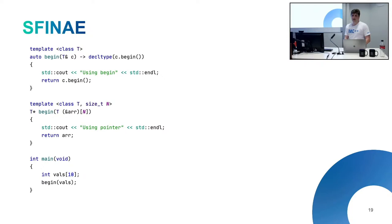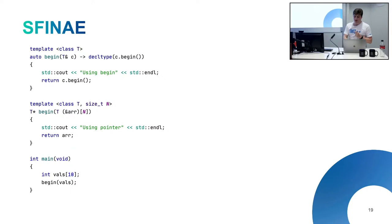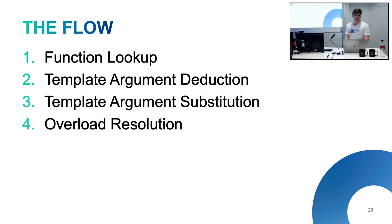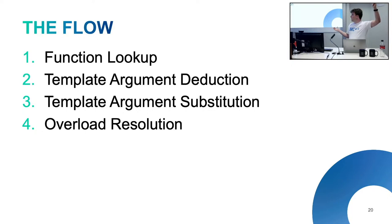Just really importantly: you're substituting into the signatures of the function — the return types, the declarations — not looking inside the function body. That's why we had that error before with setPrice. In general, the flow of events is: look up the name, deduce the argument types being called, try substituting values into all candidate templates, and then you're left with a set of viable templates. At the end we do overload resolution — pick the best one.